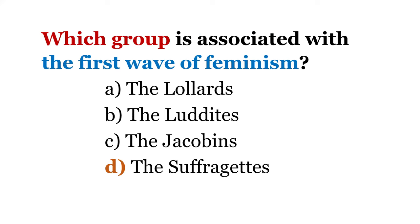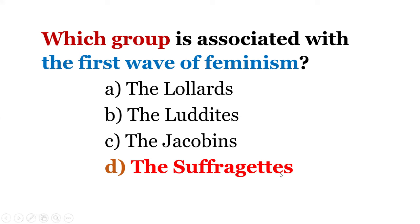Next. Which group is associated with the first wave of feminism? A: the Lowlands. B: the Luddites. C: the Jacobins. D: the Suffragettes. Answer is obvious: D, the Suffragettes. In English, the suffix '-ette' refers to feminine gender. Suffragettes were a group of women who campaigned for the voting rights — suffrage — of women, which is associated with the first wave of feminism. You can read about the different waves of feminism and famous feminists and their works.